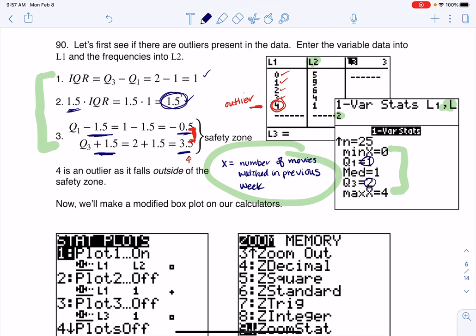Now I'll sketch my box plot. I'll make a little x-axis here. You can see my variable values: zero, one, two, three, and four. I would label it with number of movies watched.